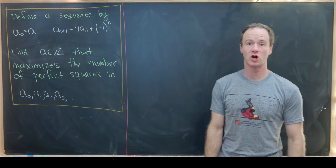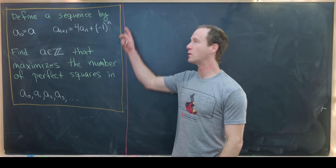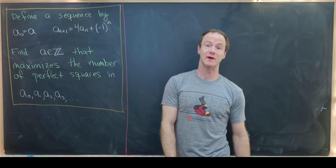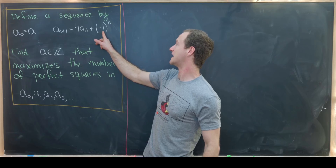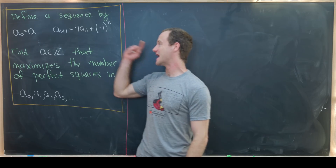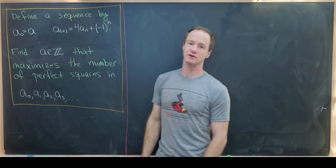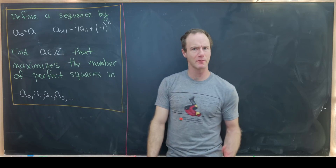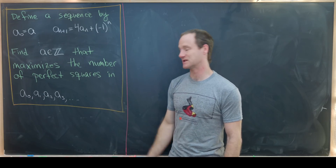Here we have a nice problem involving a recursively defined sequence and perfect squares. We want to define the following sequence recursively: a_0 will be equal to a, which is an integer, and then a_{n+1} will be 4 times a_n plus (-1)^n, for all n ≥ 0. Our goal is to find all integers a that maximize the number of perfect squares in this list.